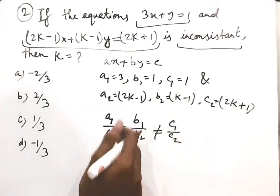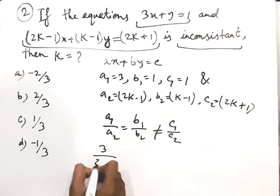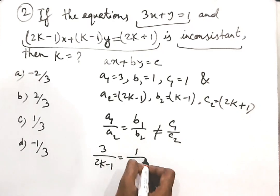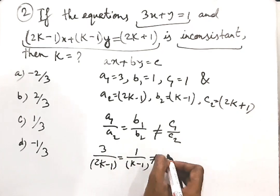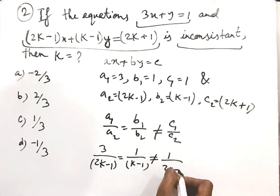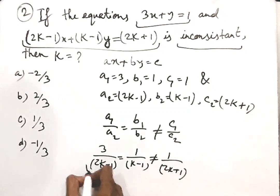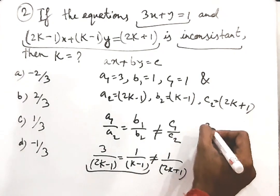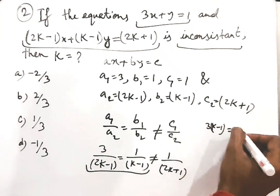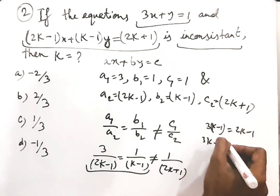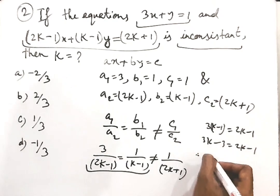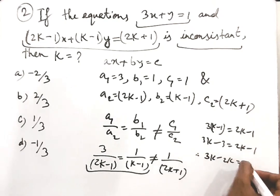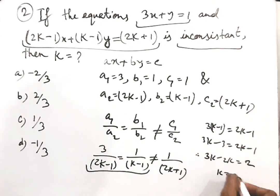Substituting values: 3 by (2k minus 1) equals 1 by (k minus 1), not equal to 1 by (2k plus 1). From the equality, 3(k minus 1) equals 2k minus 1, so 3k minus 3 equals 2k minus 1, therefore 3k minus 2k equals 2, so k equals 2. That is the answer.